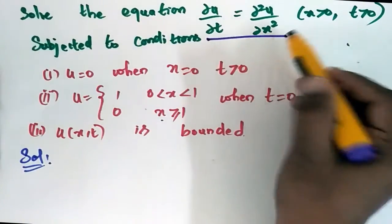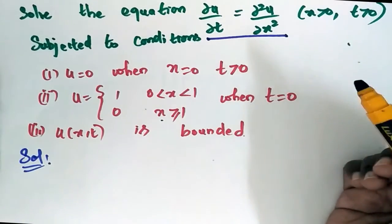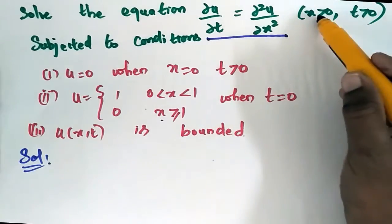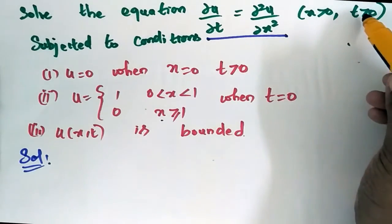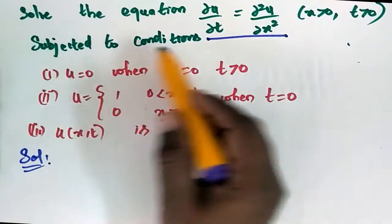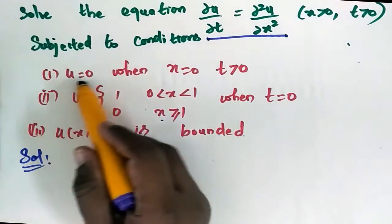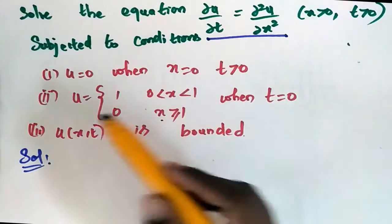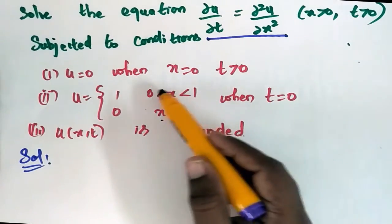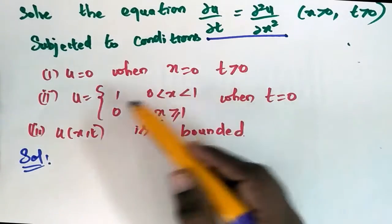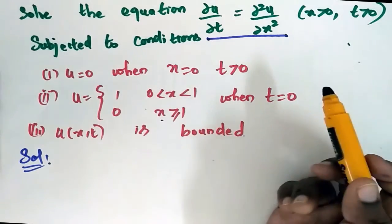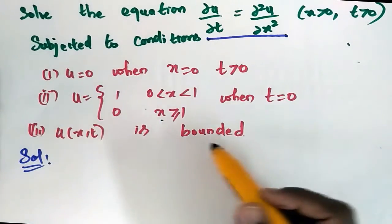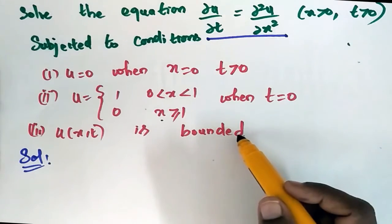Solve the equation ∂u/∂t = ∂²u/∂x², for x greater than 0, t greater than 0, subjected to conditions: u = 0 when x = 0 for t greater than 0; u = 1 when 0 < x < 1; u = 0 when x is greater than 1 when t = 0; and u(x, t) is bounded.